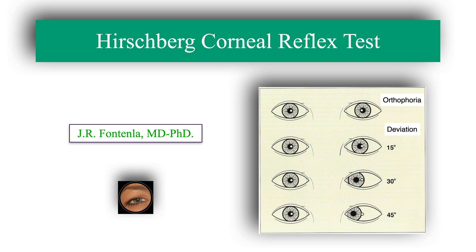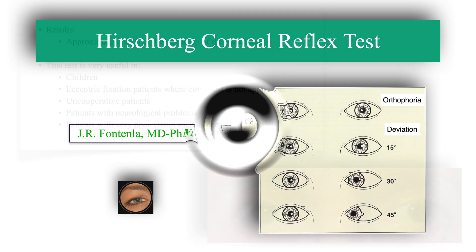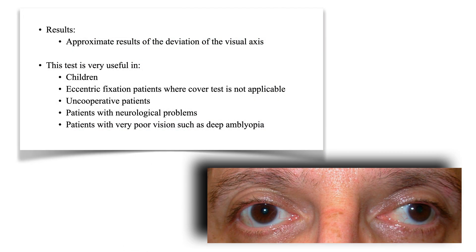This test consists of observing the position of the light reflections on the cornea when we project a point light. In strabismus, this test allows us to obtain approximate results of the deviation of the visual axis.